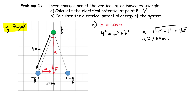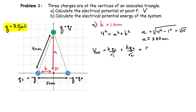Now we can calculate the total electrical potential. V total equals K times Q1 over R1, plus K times Q2 over R2, plus K times Q3 over R3. We can factor out the constant K since it's the same for all three terms. Substituting our variables: Q1 is positive Q at distance A, Q2 is negative Q at distance B, and Q3 is also negative Q at distance B.